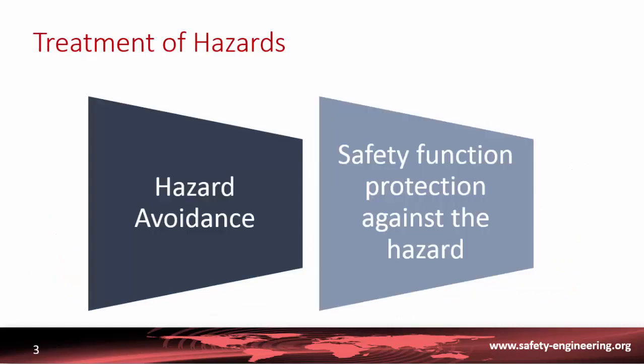Treatment of hazards is done through avoidance of the hazards. For instance, that could be done by siting. If you want to avoid flooding, you will set the platform at a level where the flooding could not reach the facility. Or by laying out the facility, for instance by making geographical separation of redundant equipment. Or by probabilistic consideration. So that's the first way of treatment of hazards.